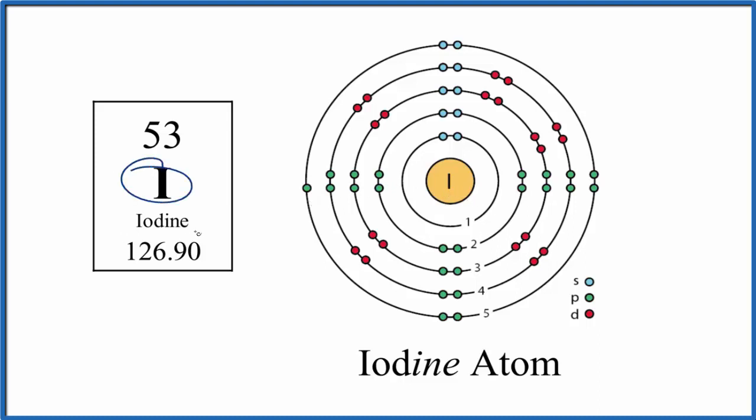You'll note that in the outer shell here we have 2, 4, 6 - only 7 valence electrons. If we had 8 that would be very stable. So we could add another electron here to the iodine atom. Let's do that.